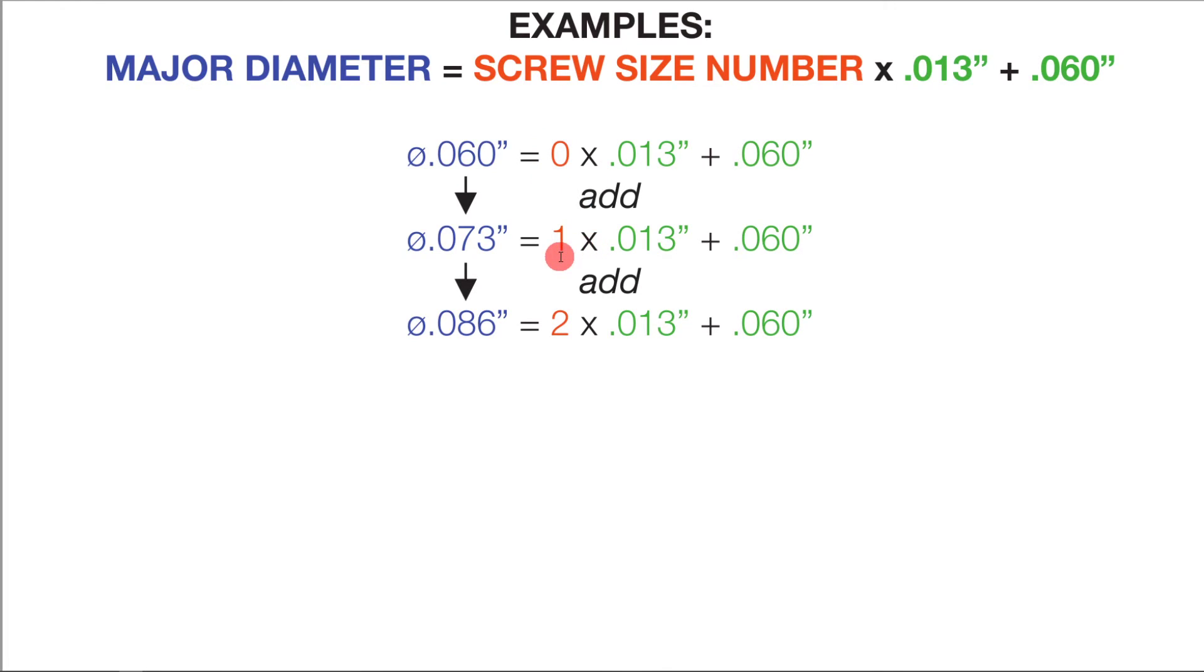Now imagine you had a number one screw. A number one screw you multiply by thirteen thousandths and you add sixty thousandths - that equals 073. So a number one screw has a major diameter of 073, and so on and so forth. You just have to keep adding thirteen thousandths for each number.